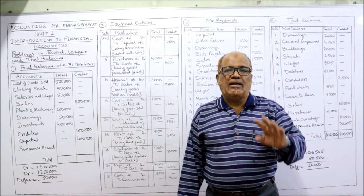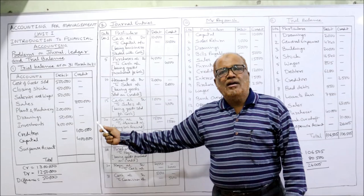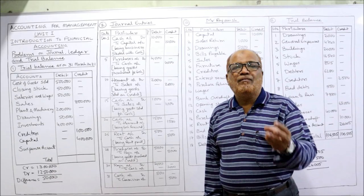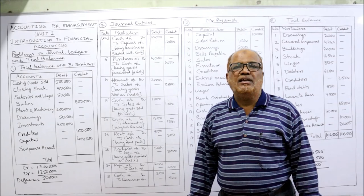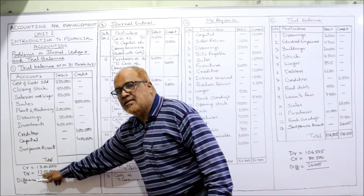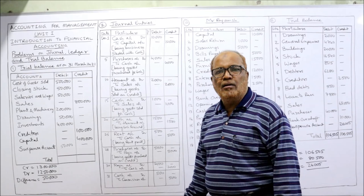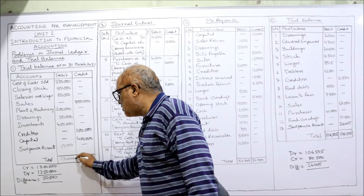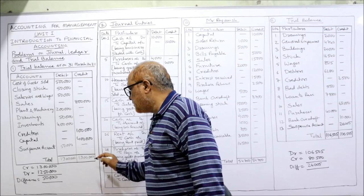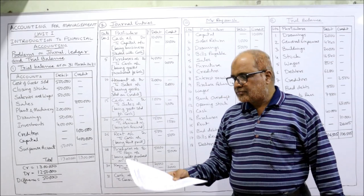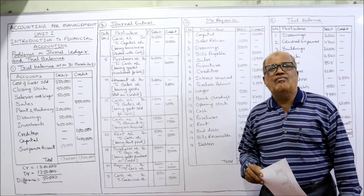Suspense account is a temporary account opened whenever the trial balance does not tally. Here, the credit side is 13 lakh and the debit side is 12 lakh 50,000 — the difference is 50,000. This difference is written in the column with the lower total, which is the debit side, so we add suspense account 50,000 on the debit side. Now both columns total 13 lakh. This completes the first problem on trial balance.